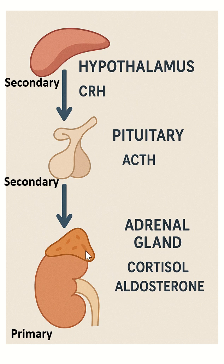Because the gland itself is defective, it cannot produce any hormones. But if it is a case of secondary adrenal insufficiency, remember, only ACTH is defective. When ACTH is defective, it will not produce cortisol. However, aldosterone levels will still be normal because the renin-angiotensin system also regulates aldosterone production — that is the major stimulus for releasing aldosterone. So in secondary adrenal insufficiency, replace only cortisol.